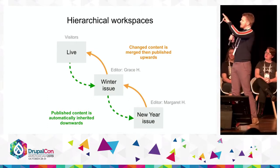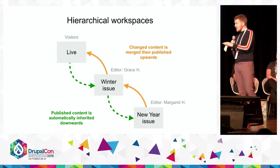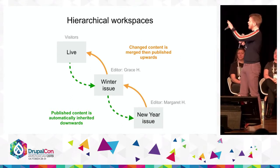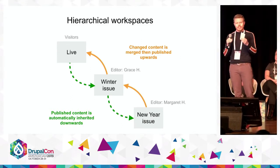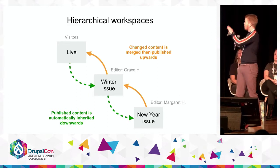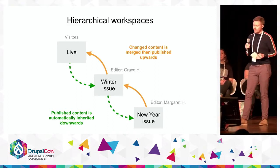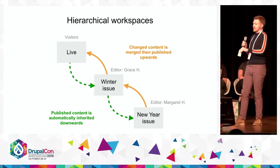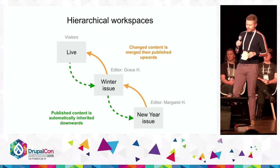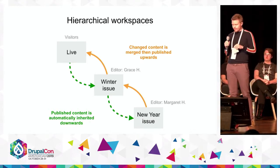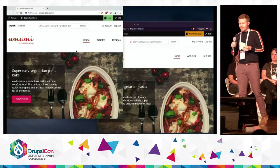The way it works is that published content is automatically inherited downwards, so that Grace and Margaret here can work on these changes together, where Margaret inherits all the changes that Grace is working on in the winter issue. And then they can merge and publish changes upstream. I'm going to show a demo here in just a moment.